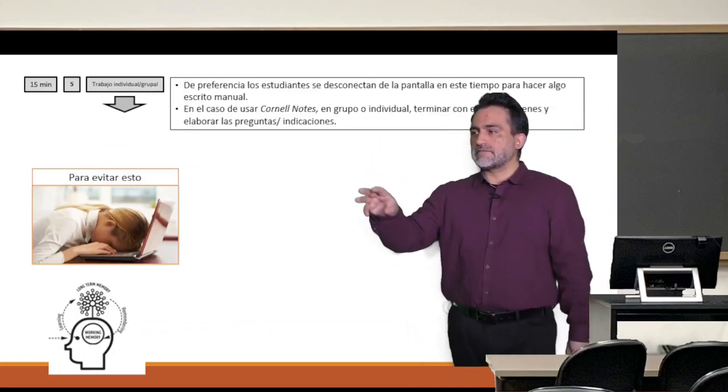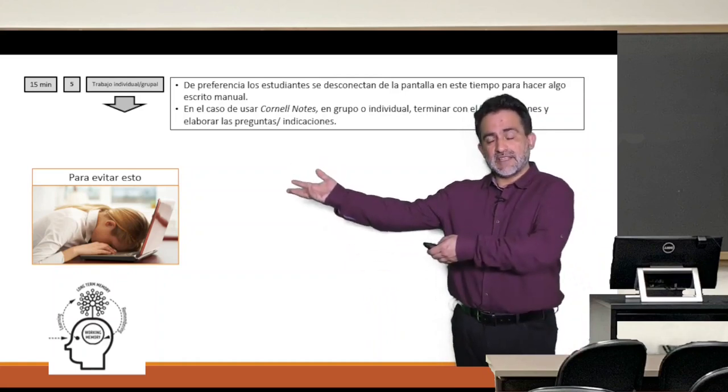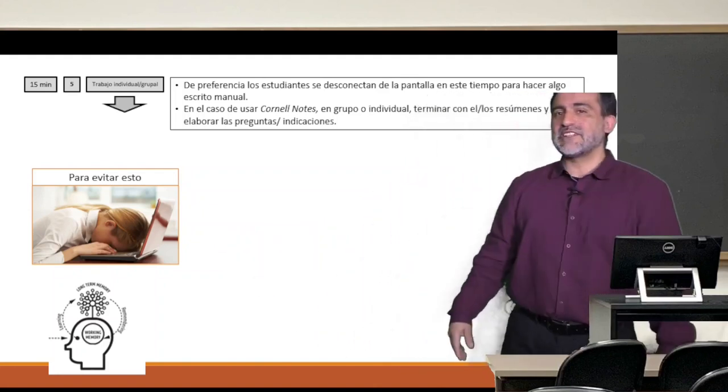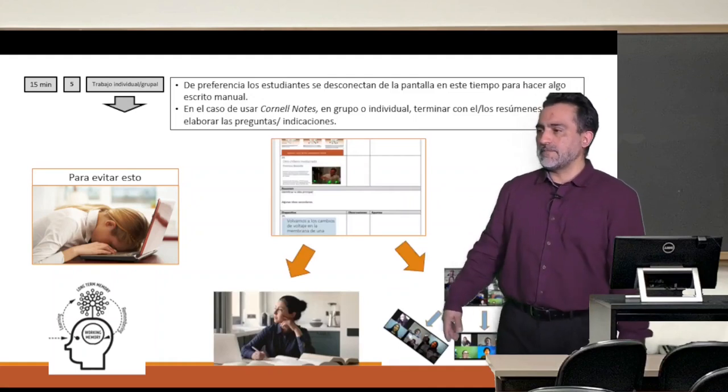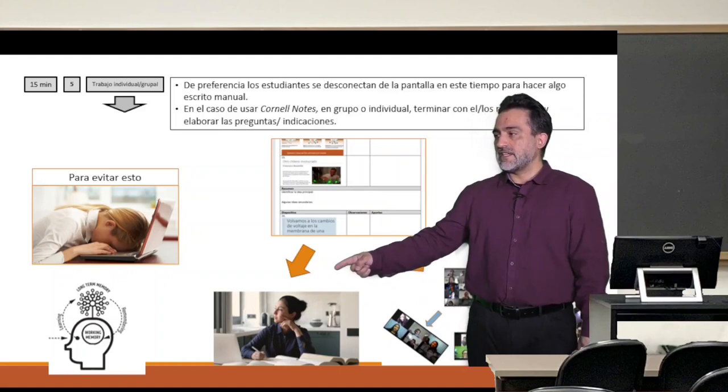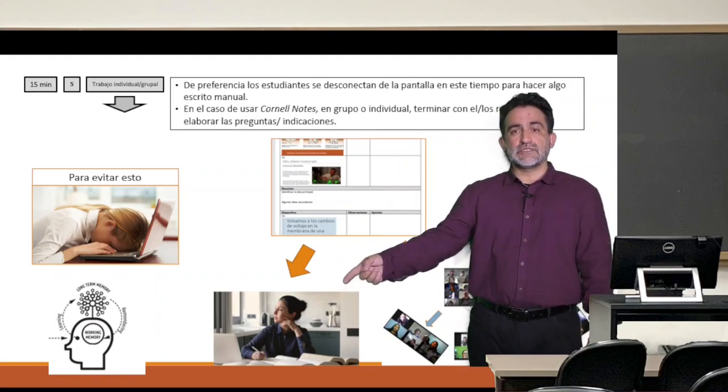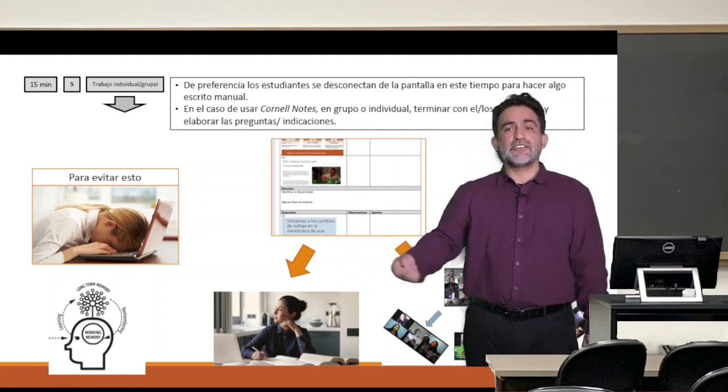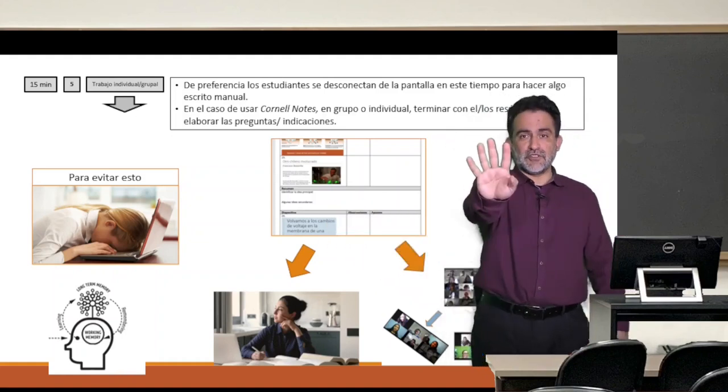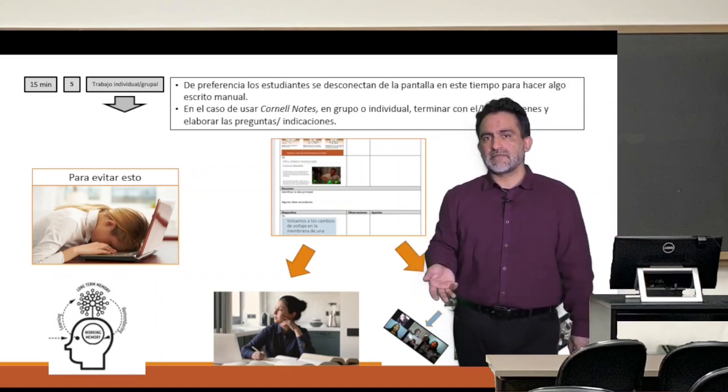And now, now is the opportunity to use the Cornell Notes, which we took in that first period, to avoid that, the screen fatigue of being there all the time watching. And it can be done in two ways. One, the student, I recommend this option, tell the student, okay, you disconnect for 15 minutes and go work on your Cornell Notes, try to complete it and finish that summary box. That's one option. It's a good option because it means screen disconnection. 15 minutes is super good.